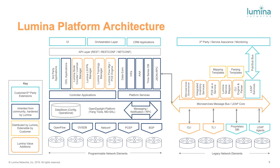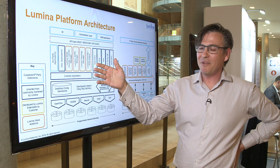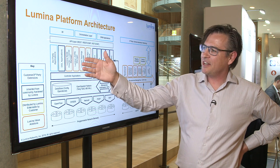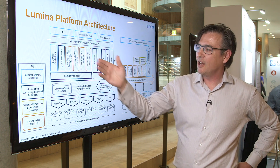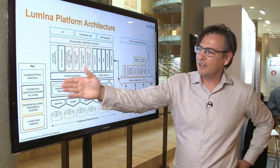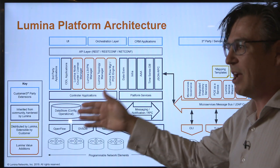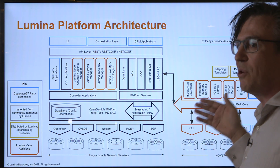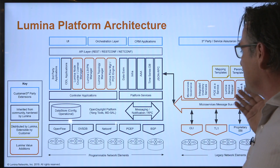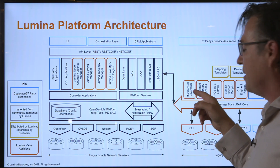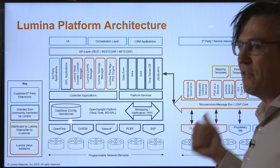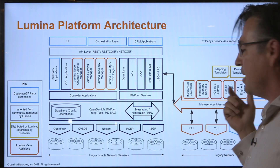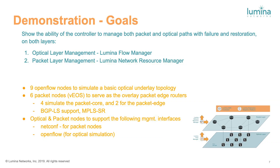This is the LUMINA platform architecture. We take the standard open source community distribution of OpenDaylight. We add applications — our flow manager sits in there. We take the inherited projects from the community and we harden those projects. And we add a microservices architecture we call the LUMINA Extensible Application Platform. We can then do additional applications in there — service mapping, workflow engine, and Yang model schema translations.